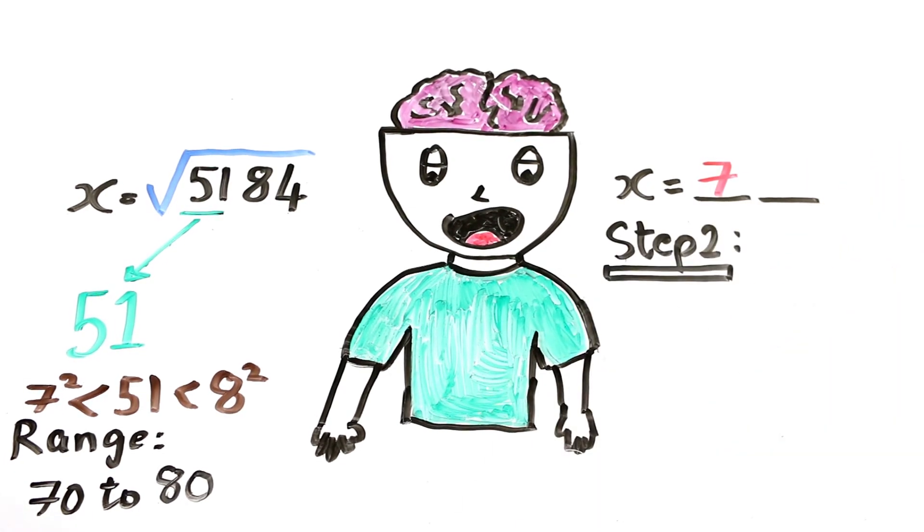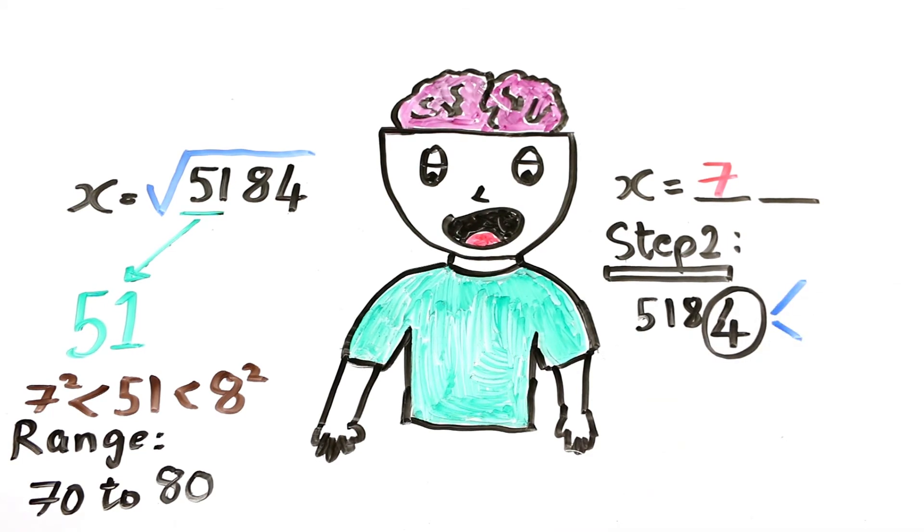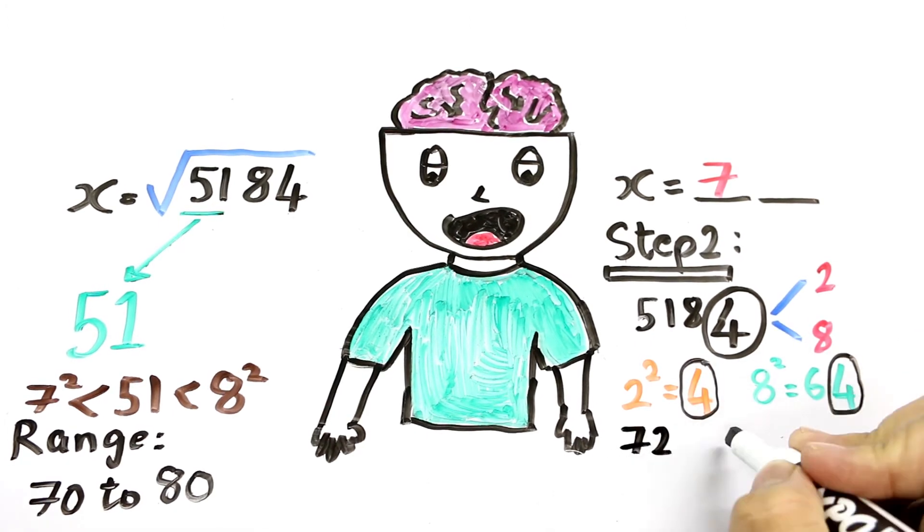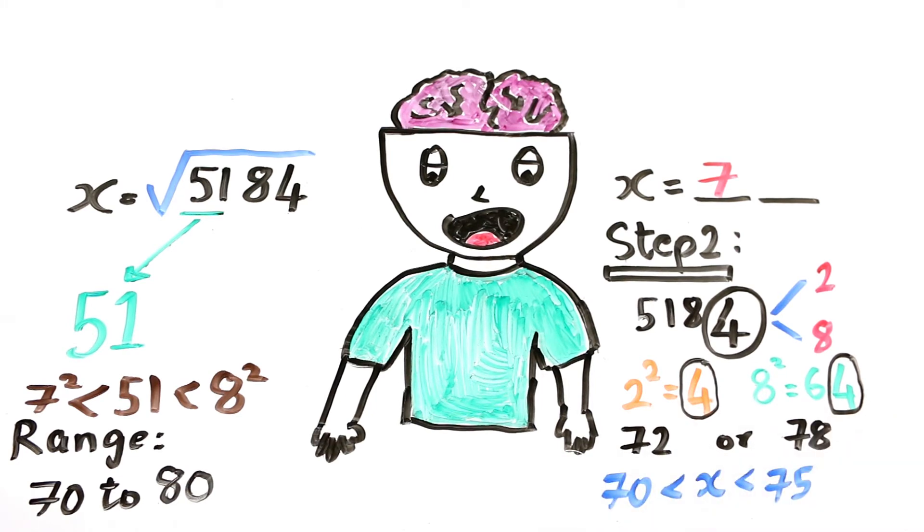Step 2. In this step, we have to find units place of our square root. Looking at the last digit, that is 4, you can easily say that the square will end in either 2 or 8. Now we are left with 72 or 78 as options. And as we have already found out that our number lies between 70 and 75, we can conclude that our square root is 72.